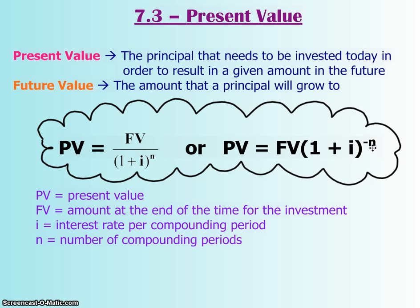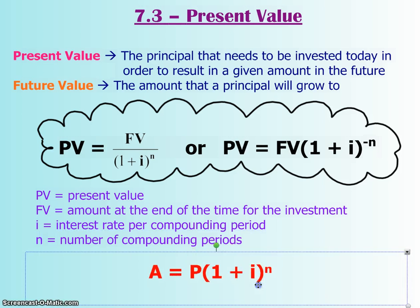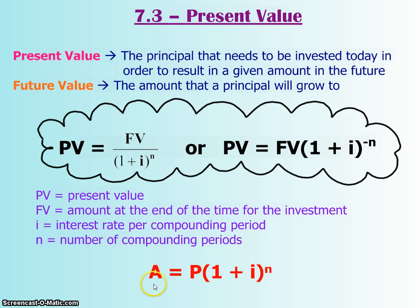Now, you're probably wondering, this sounds very familiar. Why don't we just use this formula, which is just the compound interest formula? Isn't PV the same as your principal, and isn't FV, your future amount, the same as your A? Well, yeah, it is.